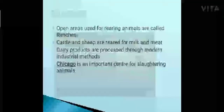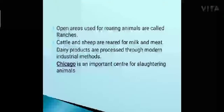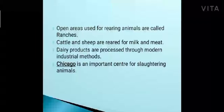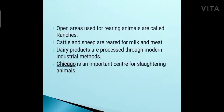Ranches are the open areas used for rearing animals. Cattle and sheep are reared for milk and meat. Dairy products are processed through modern industrial methods, and for meat there are slaughterhouses located in the towns and cities. The main slaughterhouse here is Chicago, which is the important center for slaughtering animals.